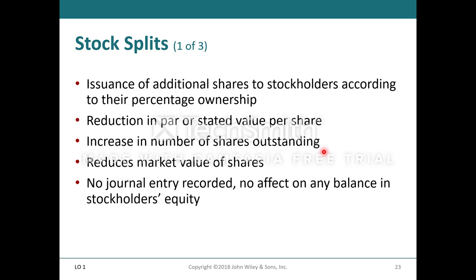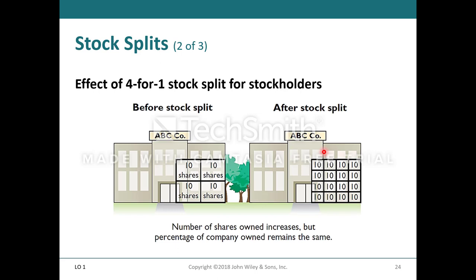Stock splits involve the issuance of additional shares to stockholders according to their percentage of ownership, a reduction in par or stated value per share, an increased number of shares outstanding, and a reduction in market value of shares. No journal entries are recorded; there is no effect on any balance in stockholders' equity. A stock split just increases the number of shares outstanding. In a four-to-one stock split, if a stockholder owned four shares before the split, the shares multiply, but their ownership percentage stays the same. Companies do this to make stock more marketable.